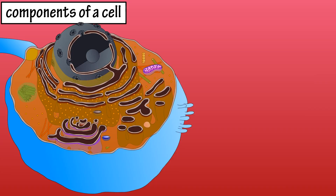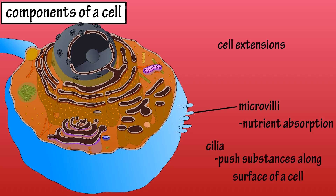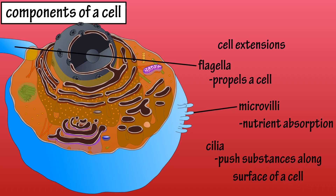Some cells have extensions, such as microvilli, which are important in nutrient absorption; cilia, which push substances along the surface of a cell; and flagella, which help to propel an entire cell. These will be covered in depth in a later video. And that covers the basics on the components of a typical human cell.